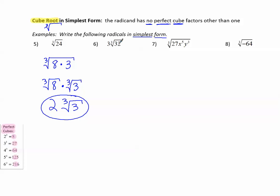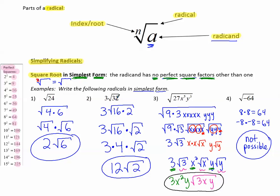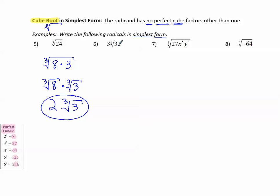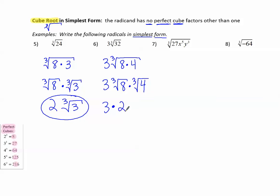Number 6: 3 times the cube root of 32. Unlike the square root example where we looked for perfect squares, here we look for perfect cubes. The perfect cube that divides evenly into 32 is 8 (8 times 4 = 32). We write 3 times the cube root of 8 times the cube root of 4. The cube root of 8 is 2, and 4 has no perfect cube factors, so: 3 times 2 times the cube root of 4 equals 6∛4.